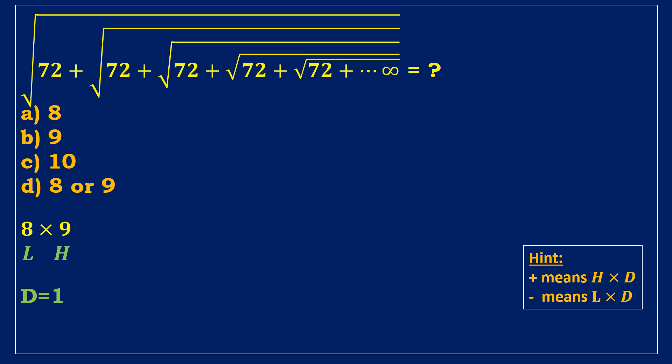In this problem, the nested radical function has a positive sign. So, 9 into 1 equals 9, which is the final answer.